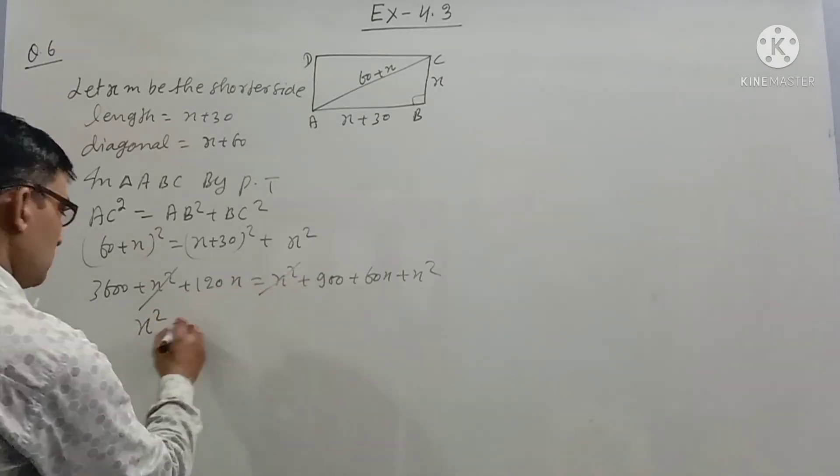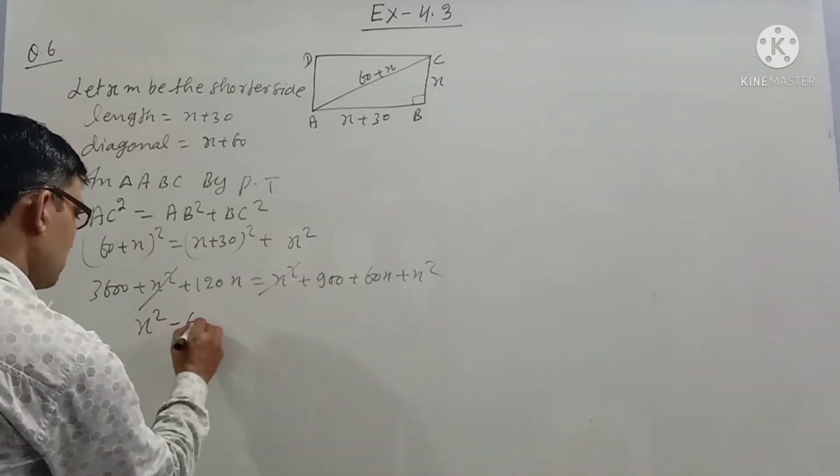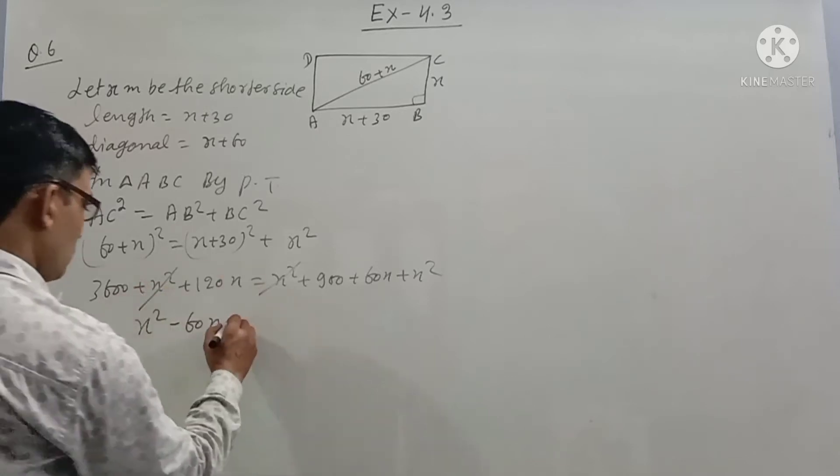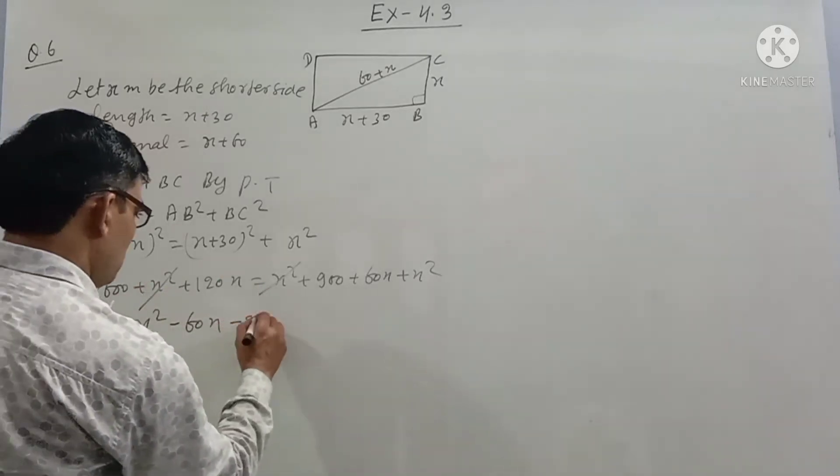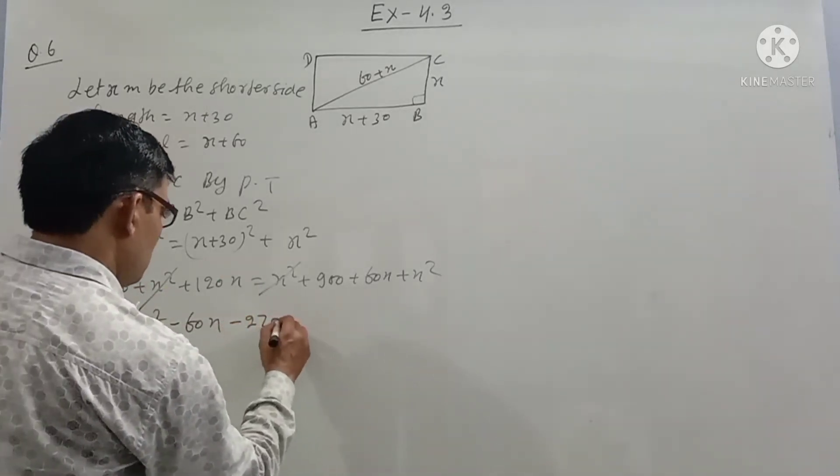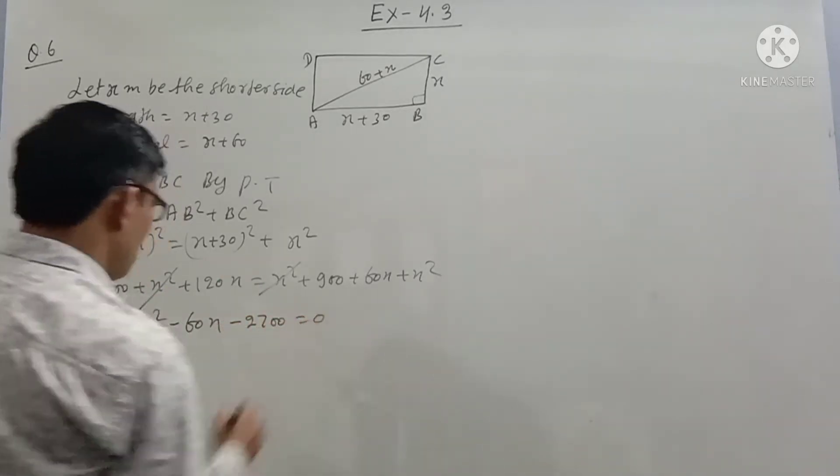Expanding and simplifying, we get x squared minus 270 equals zero — combining like terms from the Pythagoras expansion.